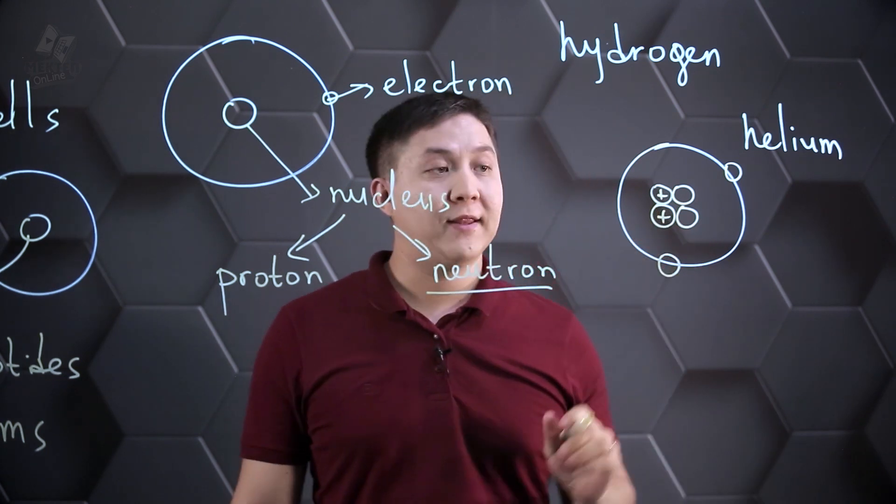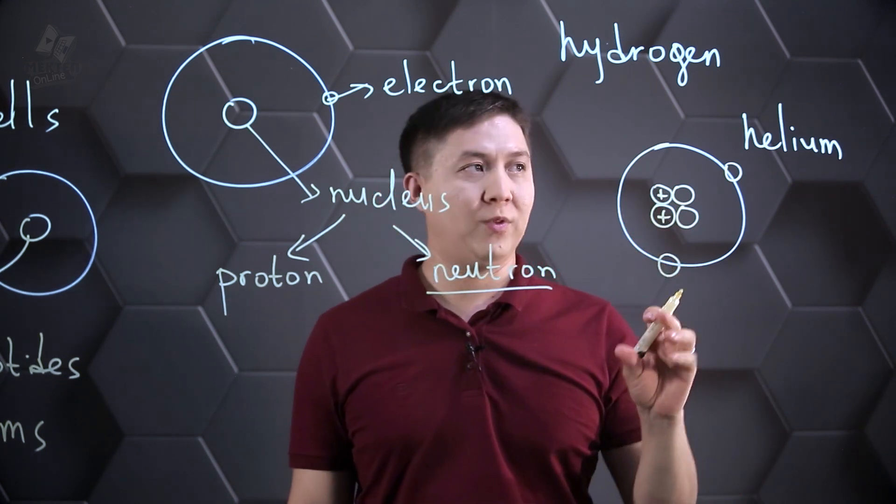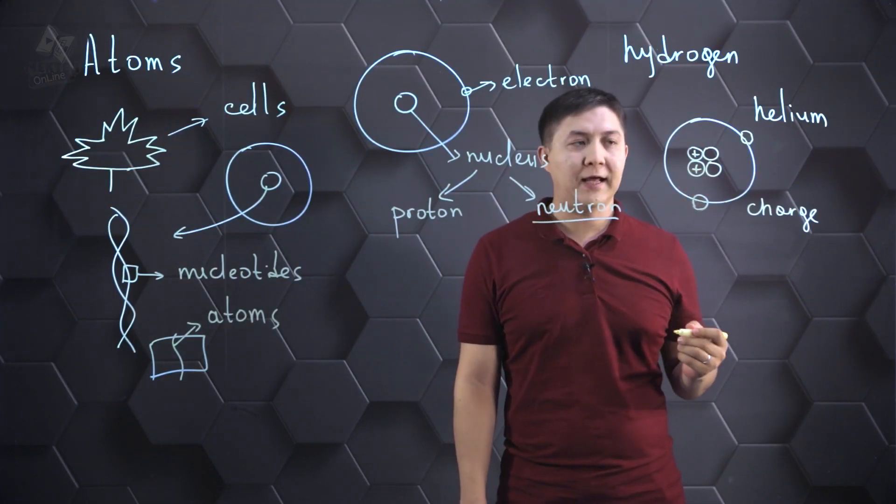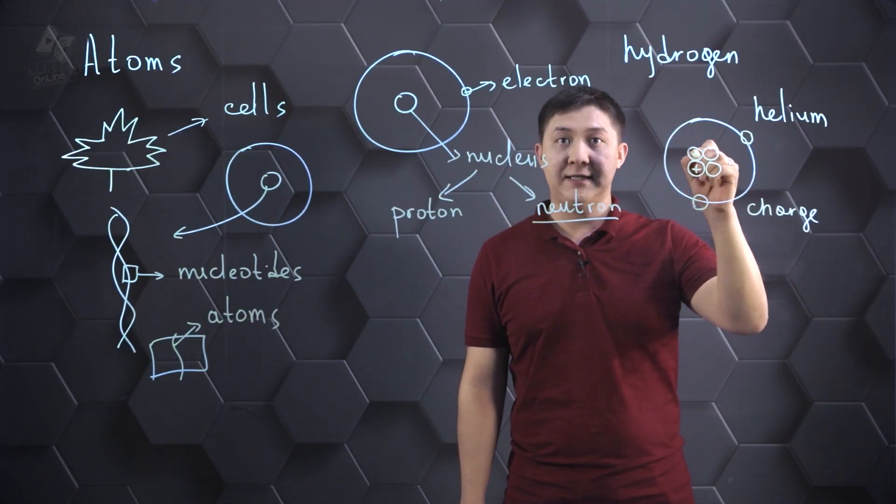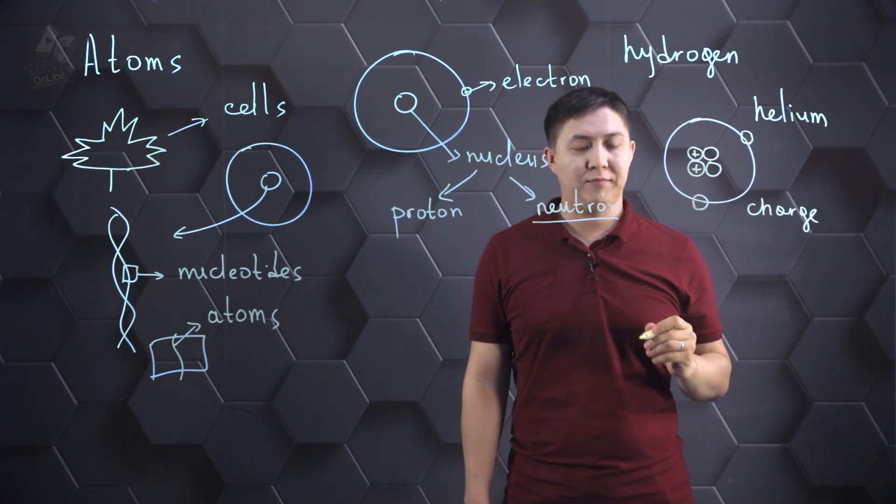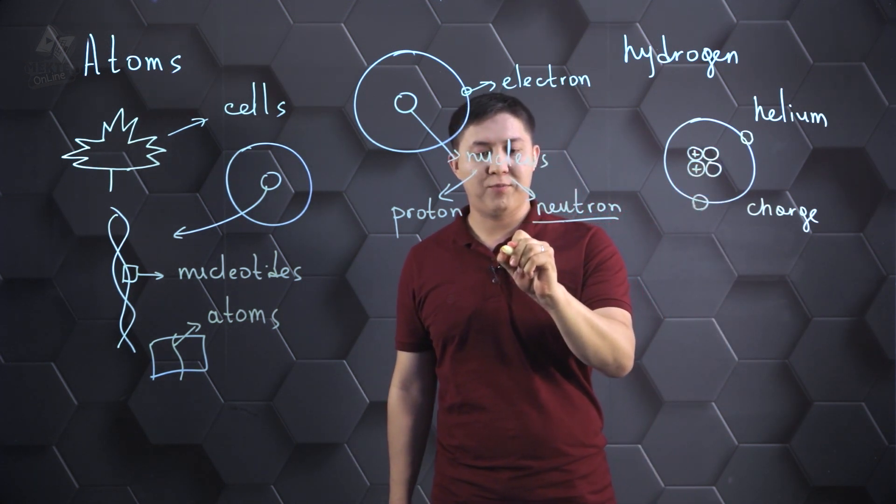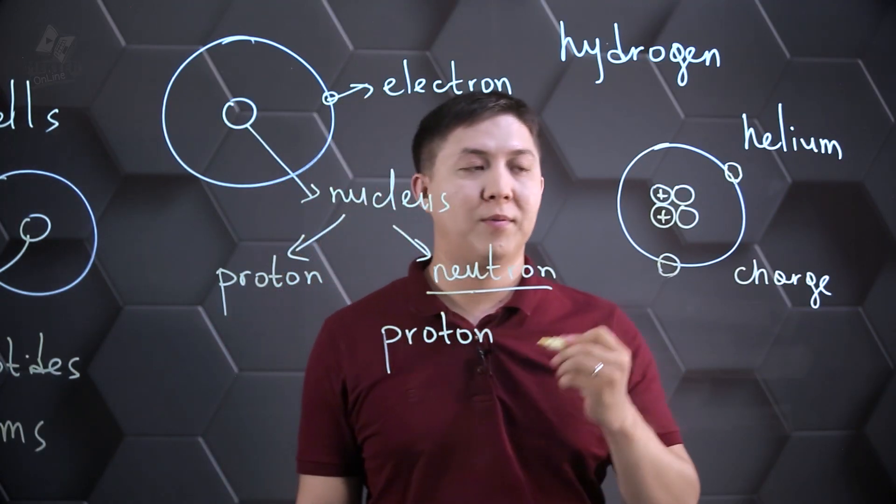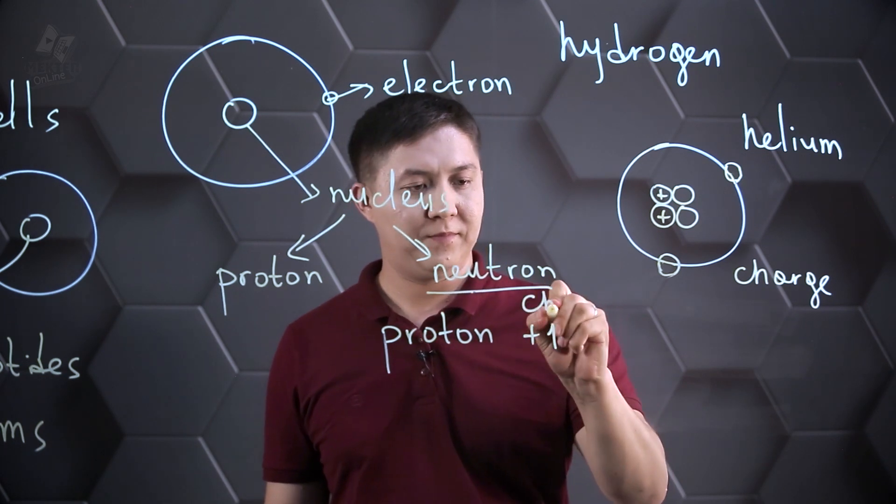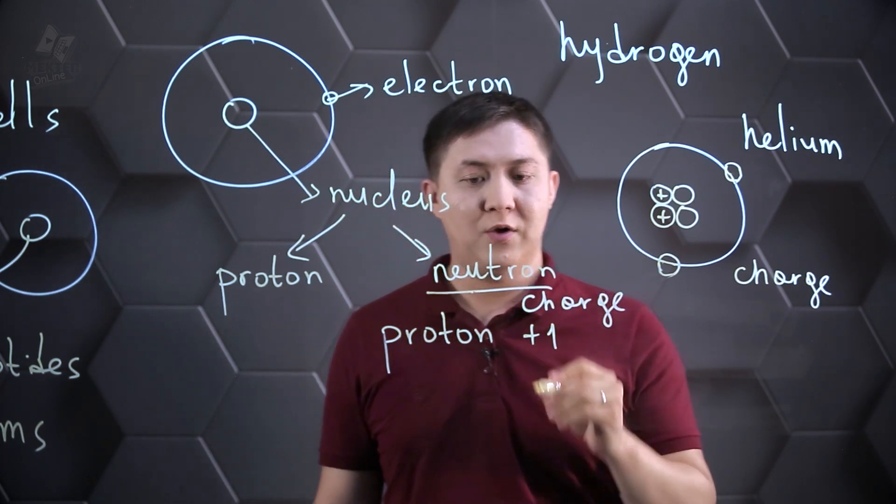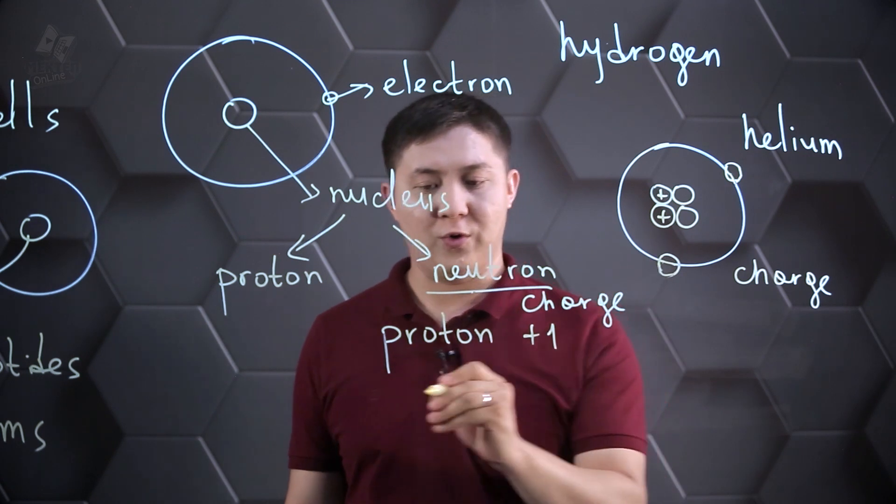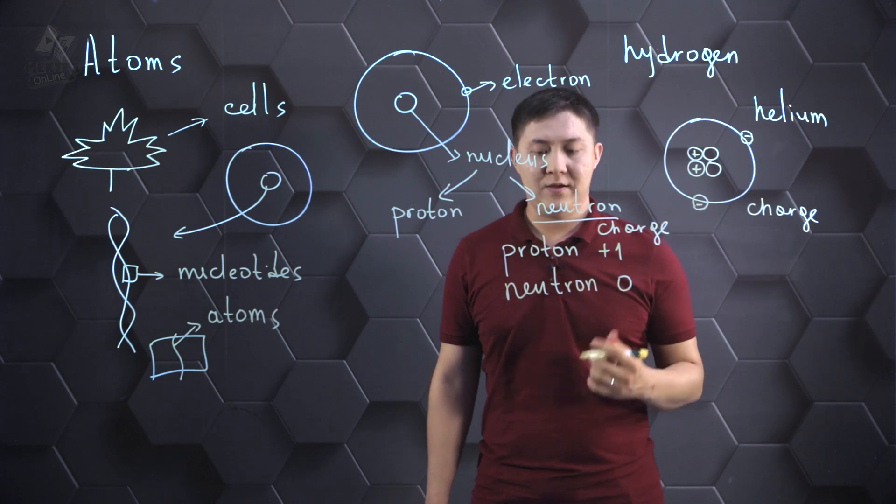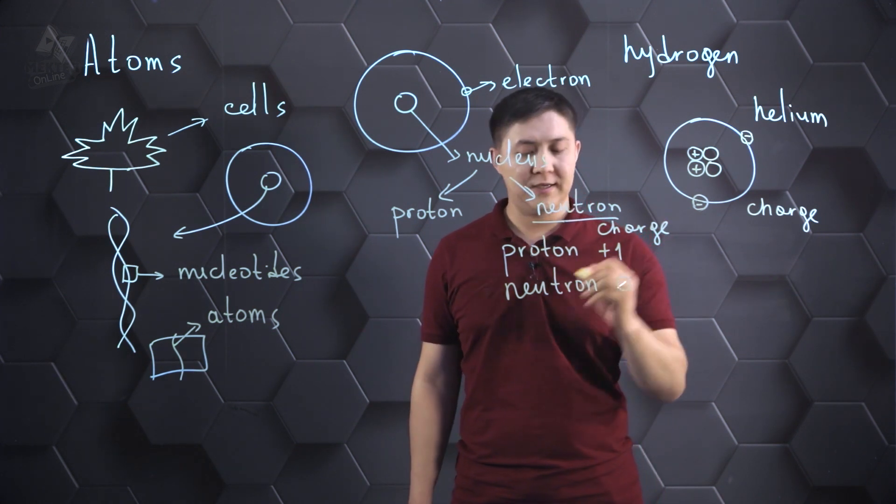As you can see, the proton and neutron of the helium is located in the center of the atom. Here, you can see that I have put the symbol of positive on the protons because relative charge of proton is equal to plus one.